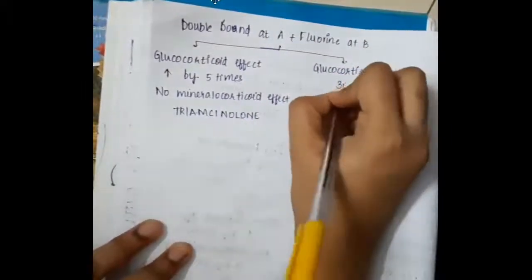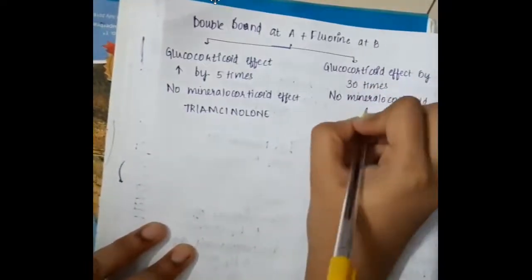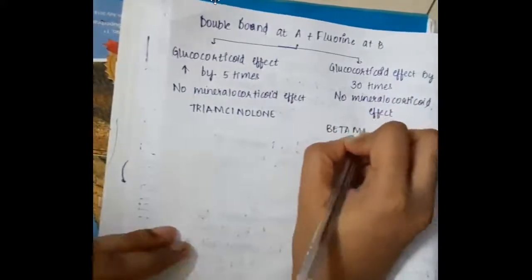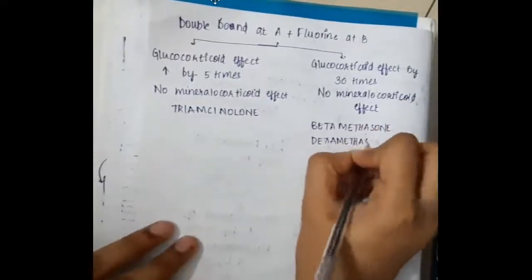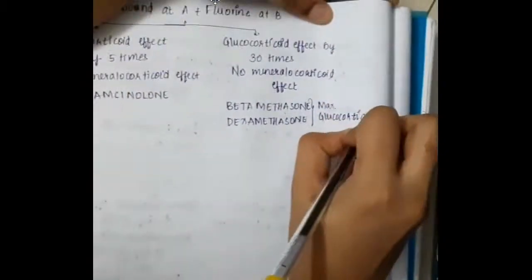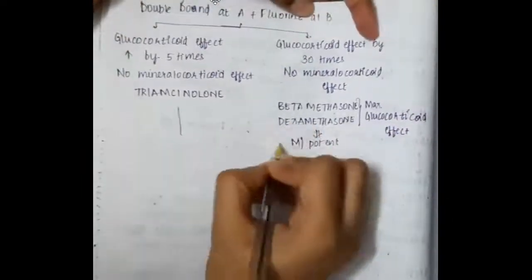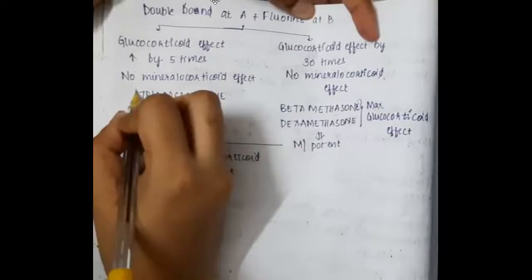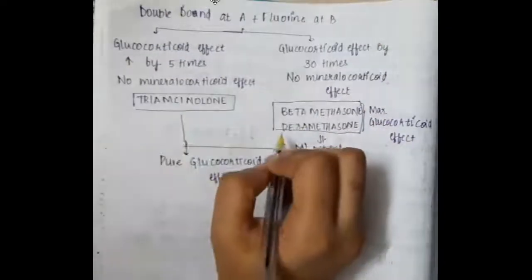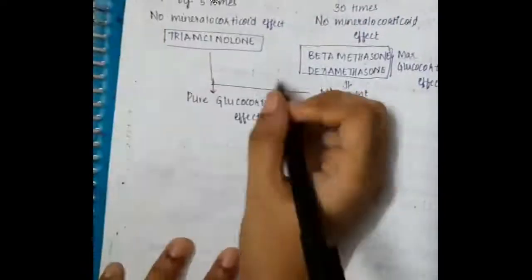The second group is betamethasone and dexamethasone, where the glucocorticoid effect is increased by 30 times and there is no mineralocorticoid effect. Betamethasone and dexamethasone have maximum glucocorticoid activity. Triamcinolone, betamethasone, and dexamethasone all have pure glucocorticoid effect.